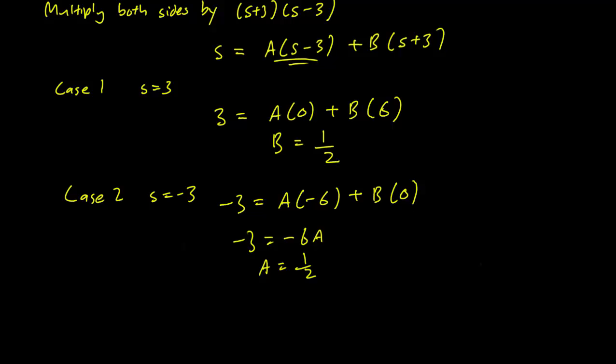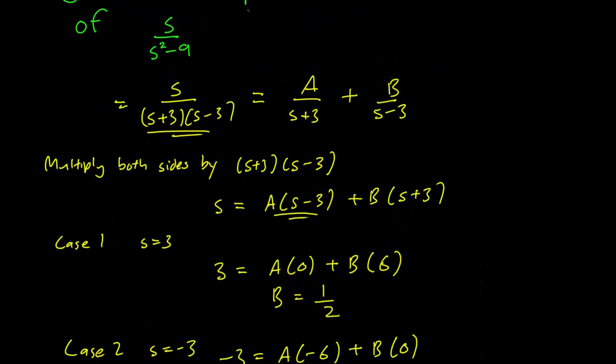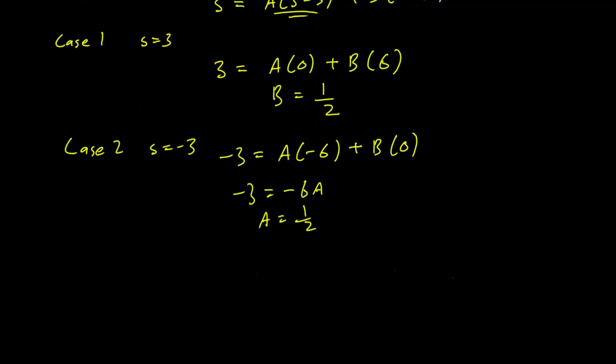But this means that looking back at our decomposition here, we have s over s squared minus 9 equals 1 half, 1 over s plus 3, plus 1 half, 1 over s minus 3. And this is our partial fraction decomposition. Thank you very much.